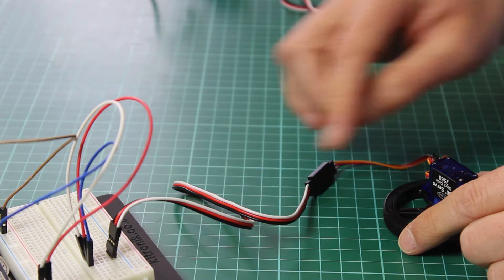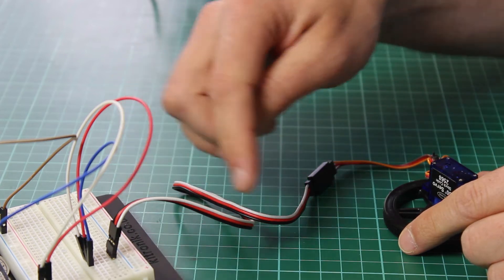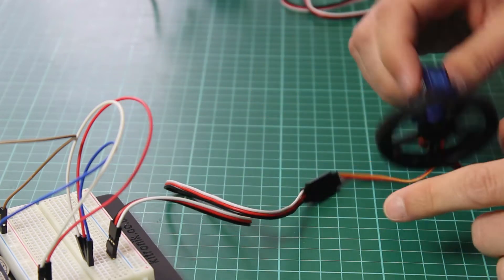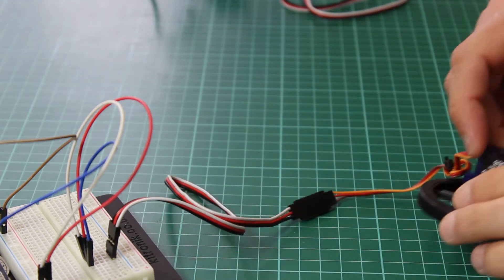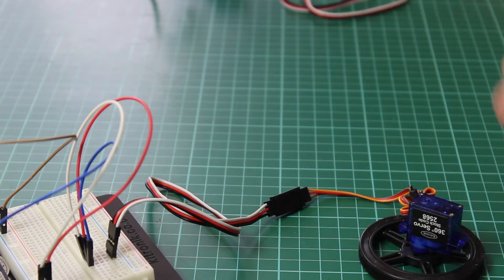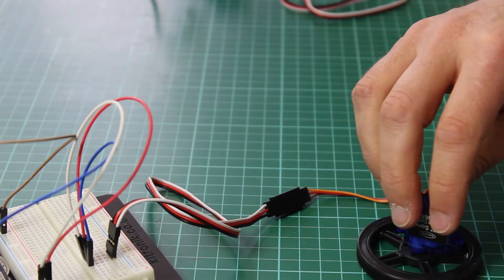In this example here we have this servo which is connected via this extension cable to the controller. We can see we've got this extra length which means we can locate this wheel much further away from the controller than we would have been able to do otherwise.